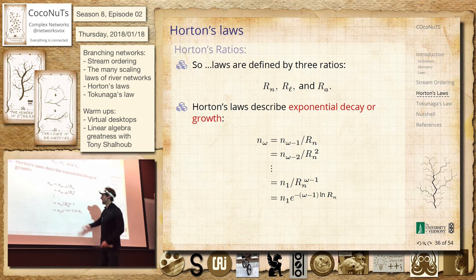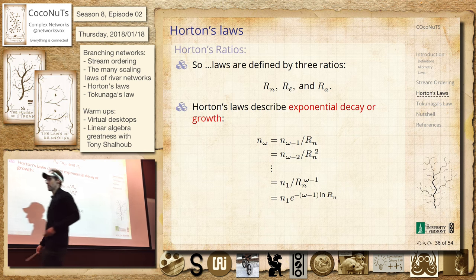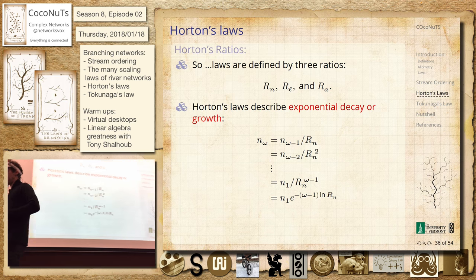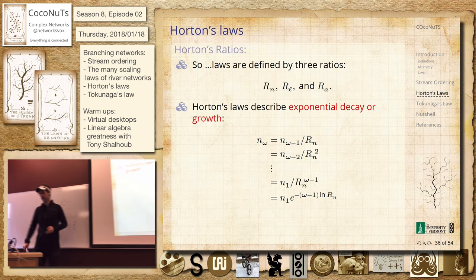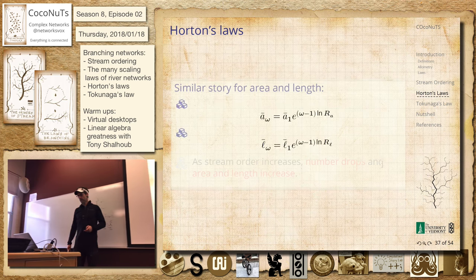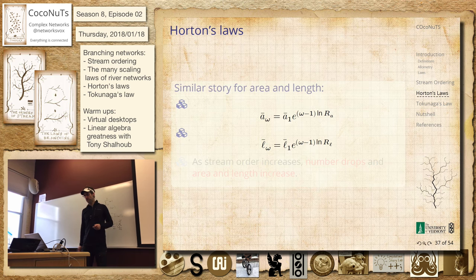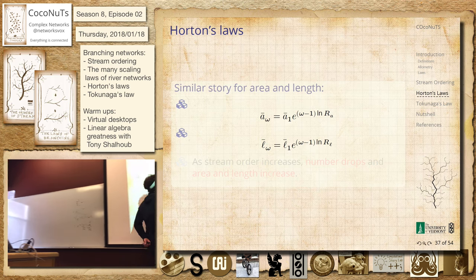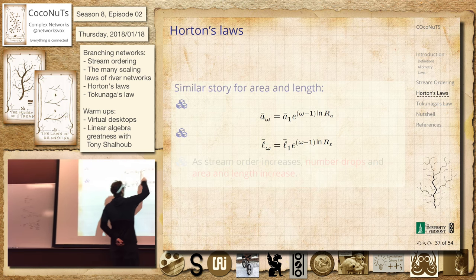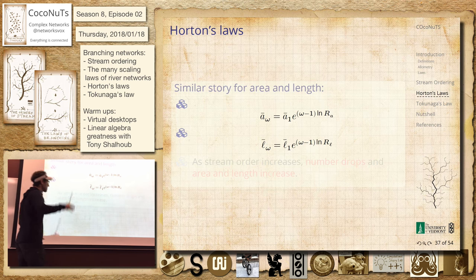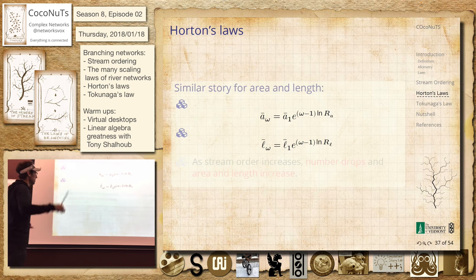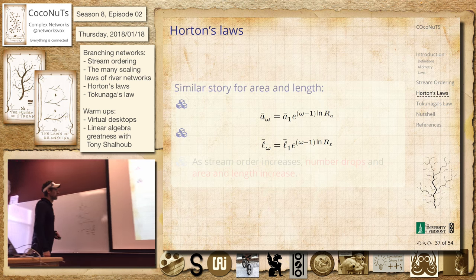So this is decaying as we increase through orders, but it's decaying exponentially. Same story for area and length, but these are pluses now because it's flipped around — the areas are growing, the lengths are growing, so they're growing exponentially. You can start to see from that how numbers drop and area and length increase, giving rise to these power law size distributions — lots of tiny little things, then they make slightly bigger things, bigger by a factor, then another factor.